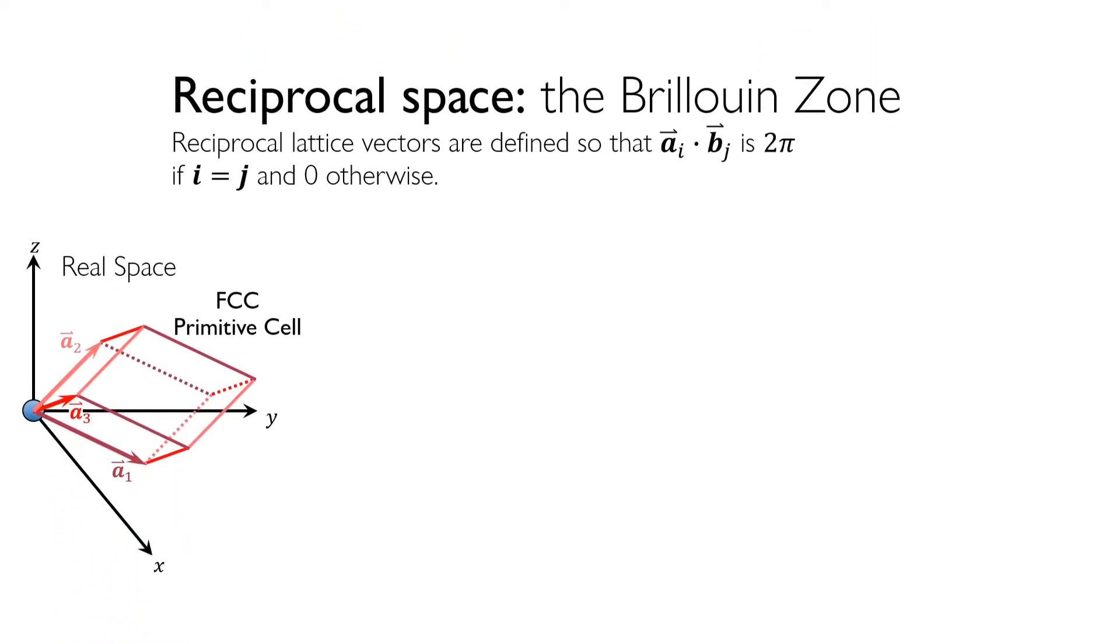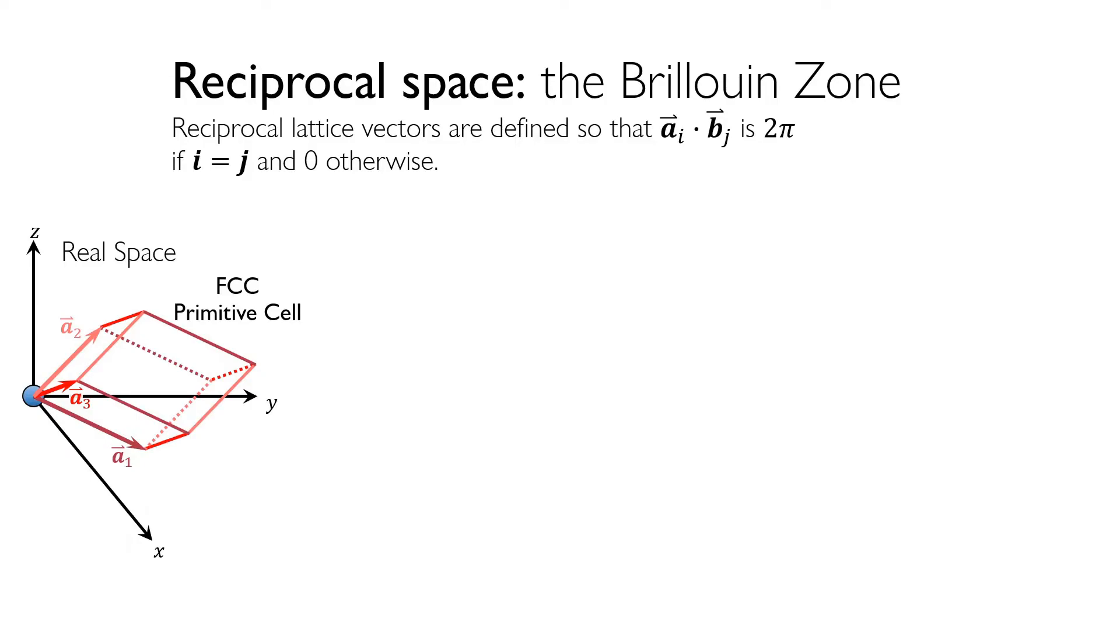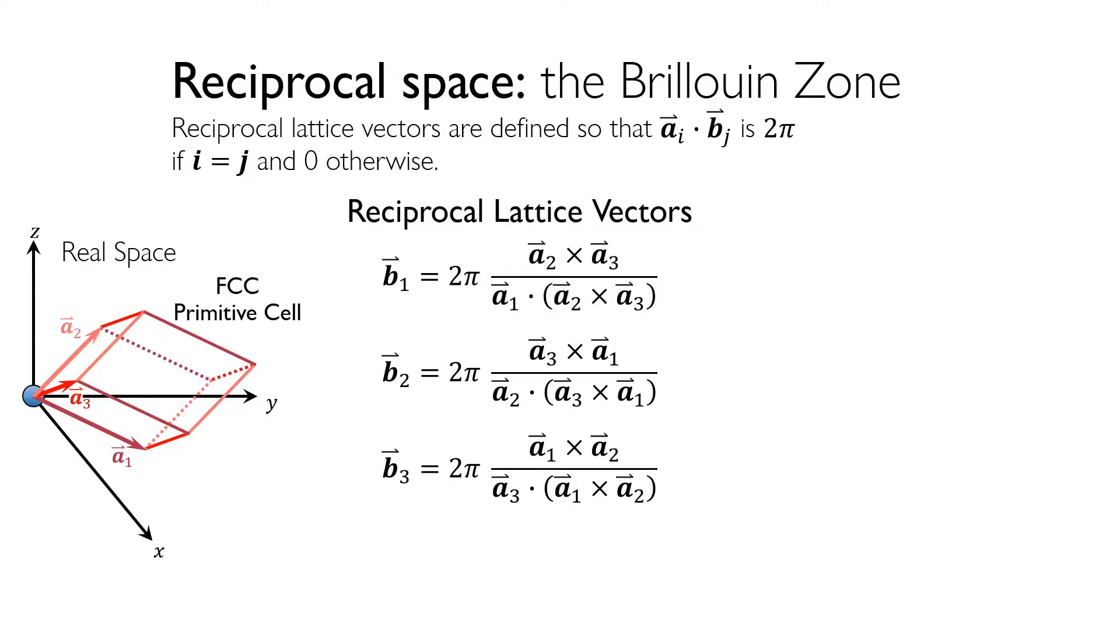Just as positions in real space can be defined in terms of the lattice vectors, it's useful to define vectors that can be used to describe the positions in reciprocal space. These vectors are known as reciprocal lattice vectors. They're defined so that the dot product of a i and b j is equal to 2 pi if i is equal to j and 0 otherwise. This definition means that the reciprocal space vectors are related to the real space vectors by the following formulas. For instance, the reciprocal lattice vector b1 is obtained from 2 pi times the cross product of lattice vectors a2 and a3 divided by the dot product between the lattice vector a1 and the cross product of lattice vectors a2 and a3. Similarly, b2 is equal to 2 pi times the cross product of the lattice vectors a3 and a1 divided by the dot product between the lattice vector a2 with the cross product of lattice vectors a3 and a1. The reciprocal lattice vector b3 likewise is equal to 2 pi times the cross product of the lattice vectors a1 and a2 divided by the dot product between the lattice vector a3 and the cross product of the lattice vectors a1 and a2.